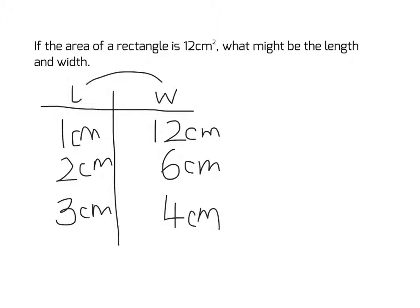And obviously these could be the other way round. You could call one of them the 1cm distance the width and the 12cm the length.